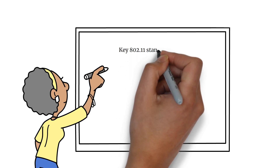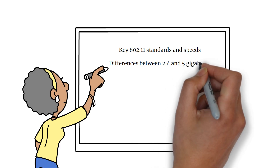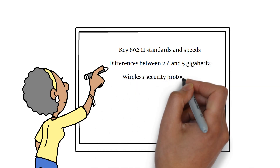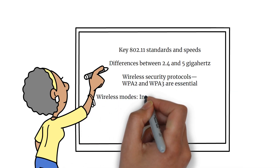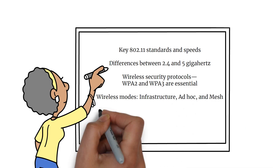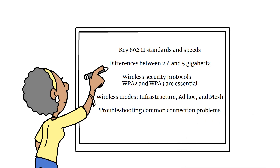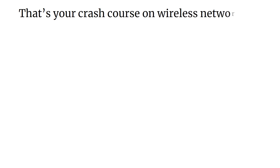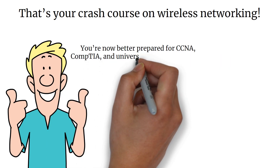Before your exam, make sure you understand the following: key 802.11 standards and speeds; differences between 2.4 and 5 GHz; wireless security protocols — WPA2 and WPA3 are essential; wireless modes — infrastructure, ad hoc, and mesh; and troubleshooting common connection problems. That's your crash course on wireless networking — you're now better prepared for CCNA, CompTIA, and university networking exams.